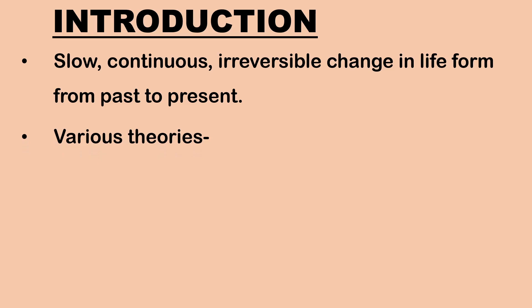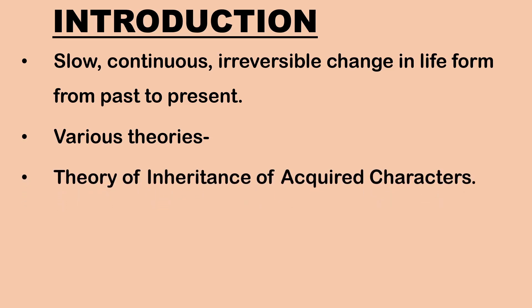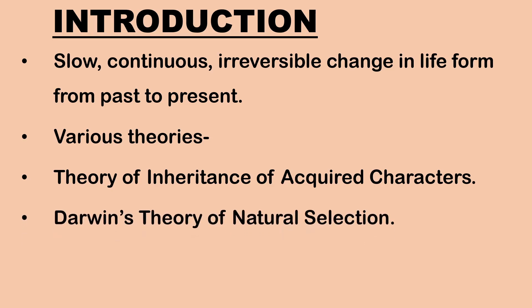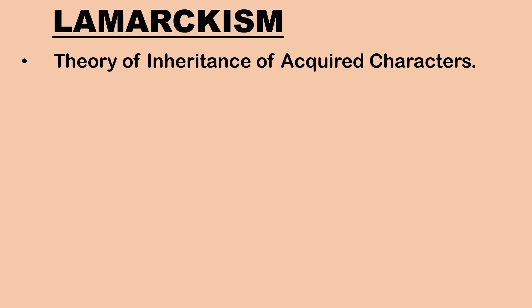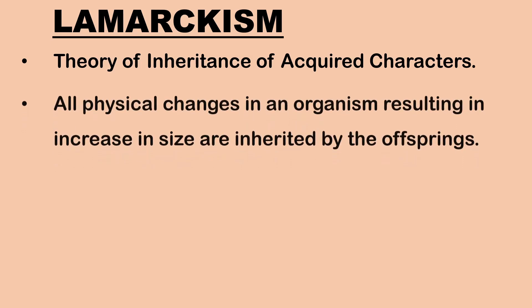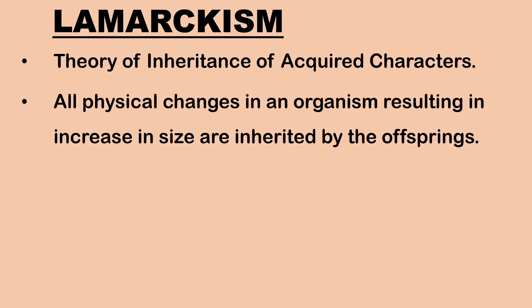Various theories have been put forward to explain the mechanism of evolution. The theories are: Theory of Inheritance of Acquired Characters, Darwin's Theory of Natural Selection, and Modern Synthetic Theory of Evolution. The Theory of Inheritance of Acquired Characters, otherwise known as Lamarckism, was proposed by Lamarck. This theory was based on the principle that all the physical changes taking place in an organism during its lifetime due to increase in size or better development of organs are inherited by its offspring.